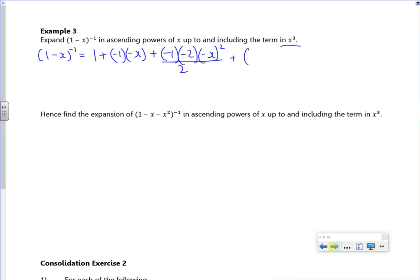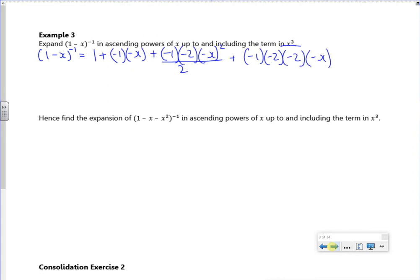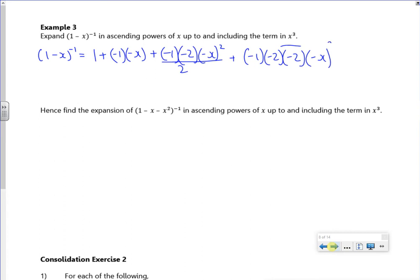n times n minus 1 times n minus 2 times x cubed over 3 times 2. So 1 minus x to the minus 1 is what, 1 plus x plus x squared, minus 2 minus 1, we'll get that.